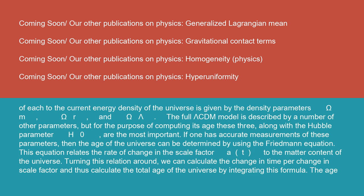The fractional contribution of each to the current energy density of the universe is given by the density parameters omega m, omega r, and omega lambda. The full Lambda-CDM model is described by a number of other parameters, but for the purpose of computing its age these three, along with the Hubble parameter H0, are the most important. If one has accurate measurements of these parameters, then the age of the universe can be determined by using the Friedman equation.